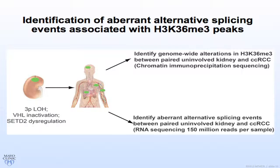At the same time, using RNA sequencing, I can identify aberrant alternative splicing events. We're looking mainly at mature transcripts using RNA sequencing at a higher depth of around 150 million reads, which allows us to identify low-abundance isoforms as well as complex splicing isoforms.